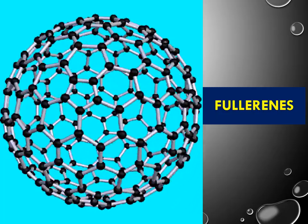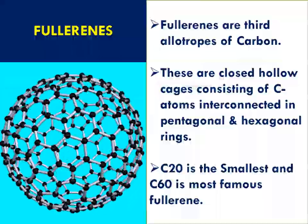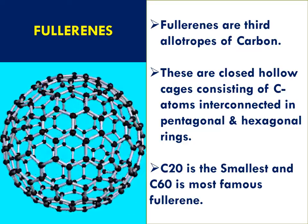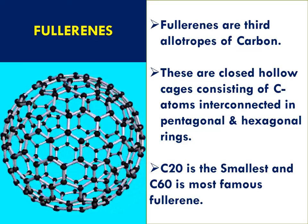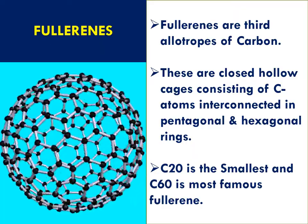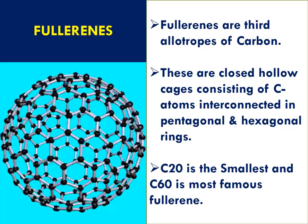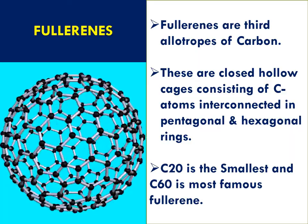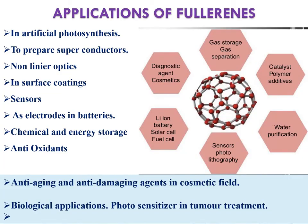The next topic is fullerenes. Fullerenes are the third allotrope of carbon after graphite and diamond. These are closed hollow cages consisting of carbon atoms interconnected in pentagonal and hexagonal rings, having a hollow sphere structure. C20 is the smallest and C60 is the most famous fullerene.